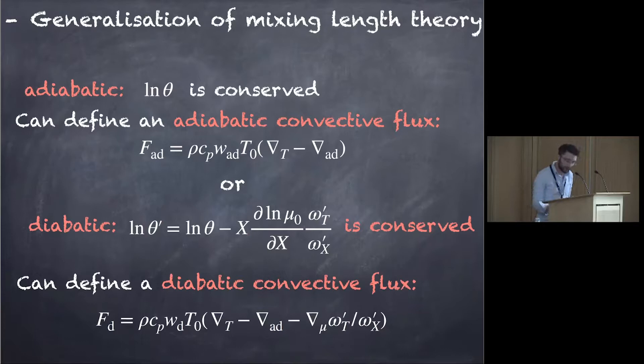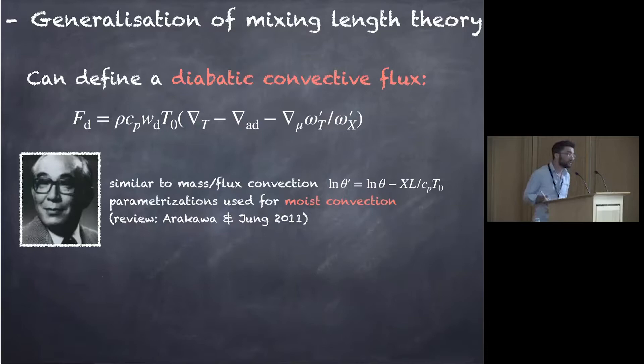And actually, this idea is not coming from anywhere. It's actually completely inspired by what is done in earth climate community to model moist convection. Because moist convection is not resolved in GCM, it's parametrized. You need a parametrization like a mixing length theory type.